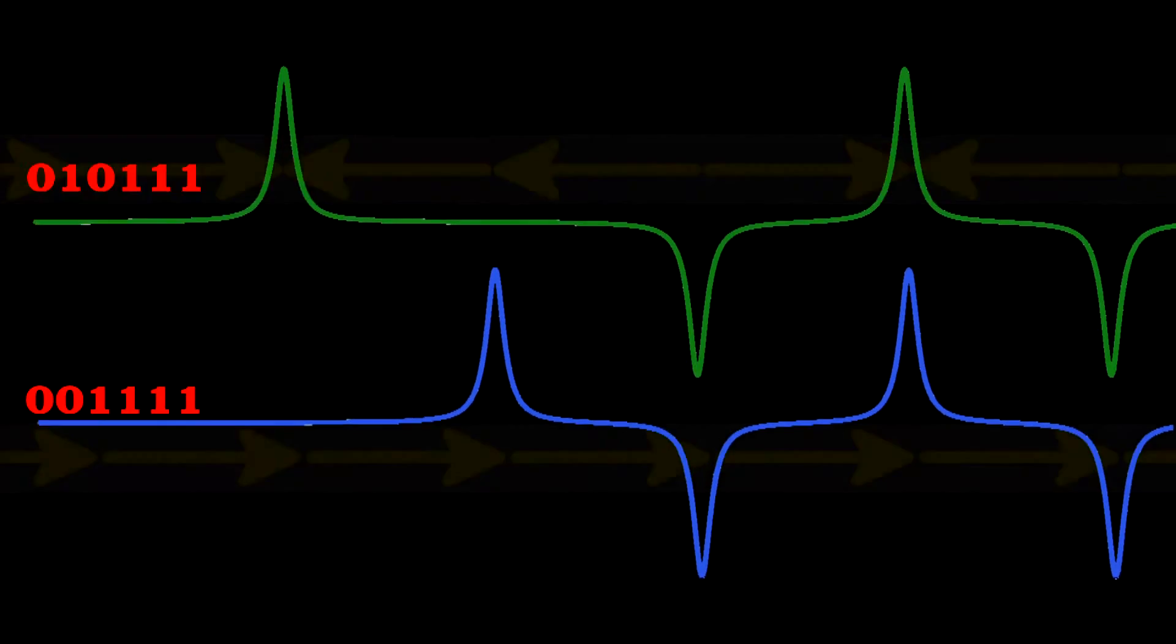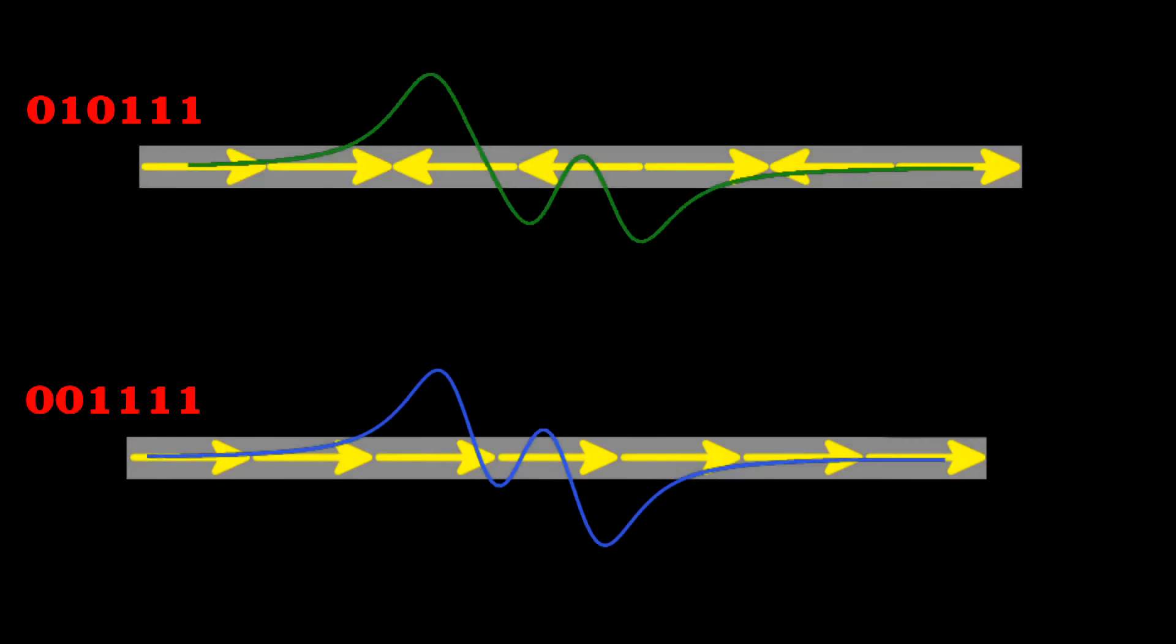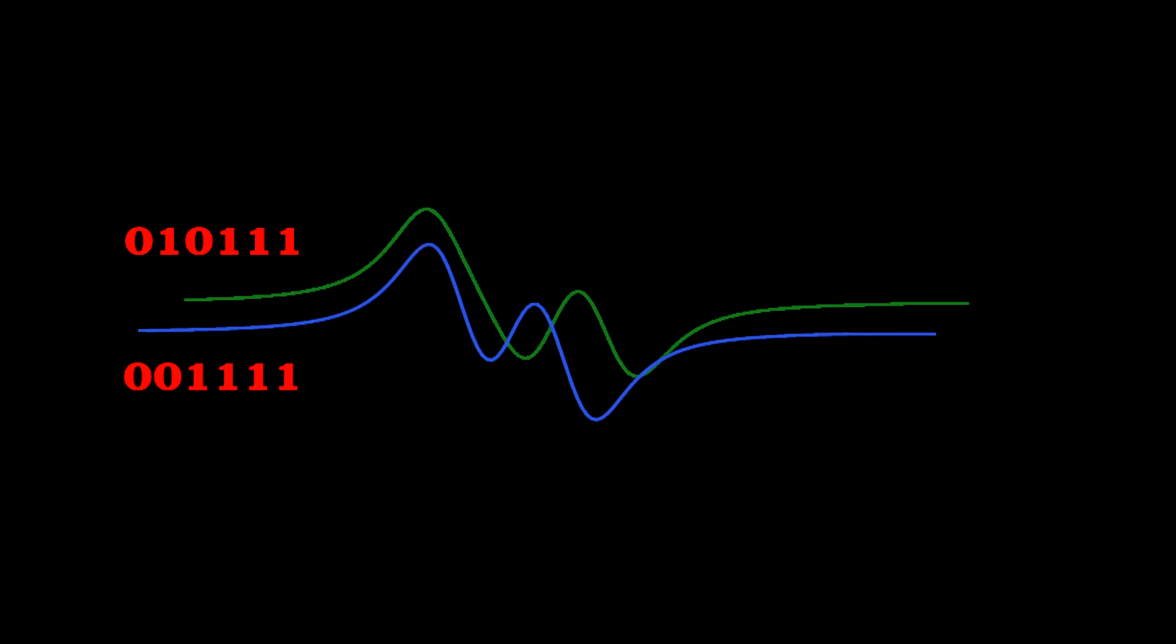Engineers, though, always work to get more and more data onto a hard drive. One way to do this is to shrink the magnetic domains, but look what happens to the voltage spikes when we do this. For each sequence, the spikes of the ones now overlap and superimpose, giving fuzzy signals. In fact, the two sequences now look very similar.